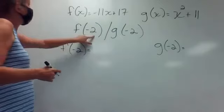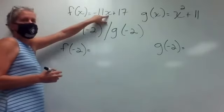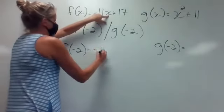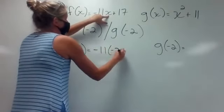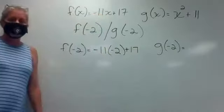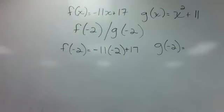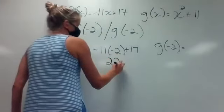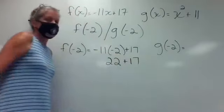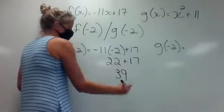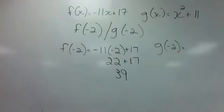Let's find f of negative two. Going to f and replacing its x with negative two gives me negative 11 times negative two plus 17. Negative times negative gives me positive 22, plus 17. When I add that together I get 39. So there's the f of negative two.